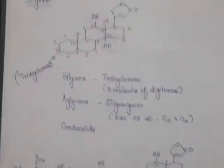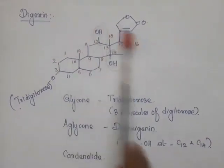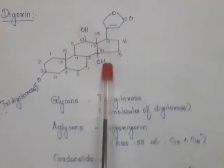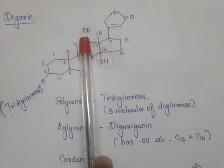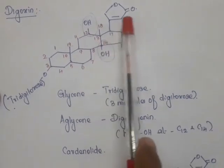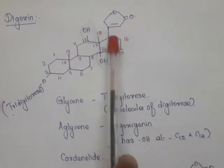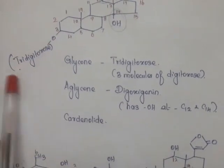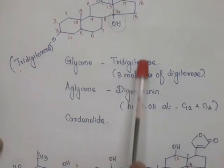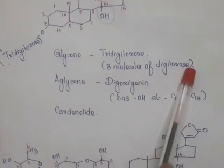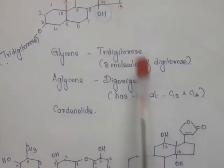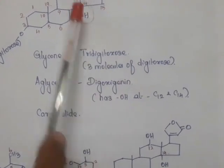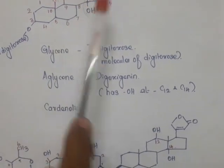Now we will see the first drug, digoxin, a cardinolide cardiac glycoside. Digoxin has the steroidal nucleus with two angular methyl groups, and hydroxy groups at C12 and C14. At C17 it has a five-membered lactone — that's why it is a cardinolide. At C3, the sugar portion is tridigitoxose — three molecules of digitoxose. The aglycone is called digoxigenin (genin means without sugar). Digitoxose has the molecular formula C6H12O4, and is a six-membered heterocyclic ring with oxygen, with OH groups at positions 1, 3, and 4, and a CH3 at position 5.